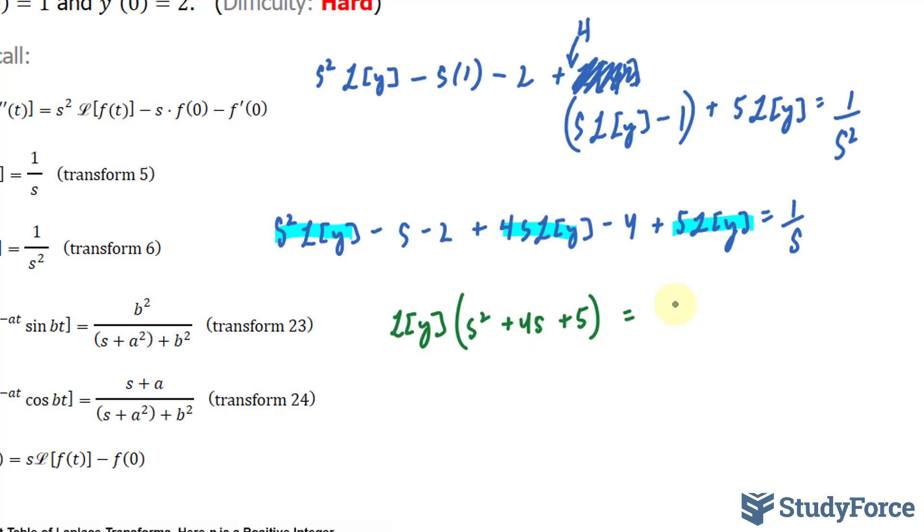Is equal to, and there should be a square here, 1 over s^2, plus s. I'm taking this over, and combining minus 2 and minus 4 is minus 6, bringing that over, gives me plus 6.